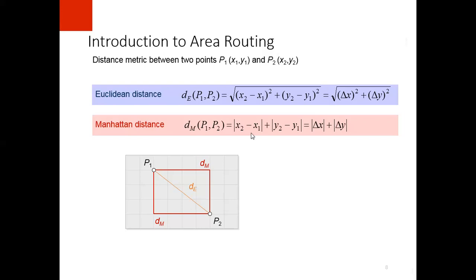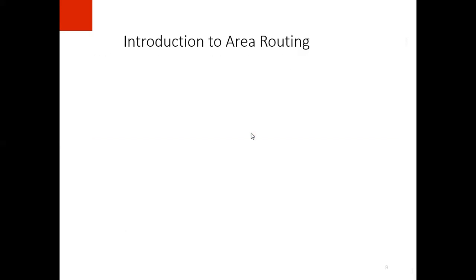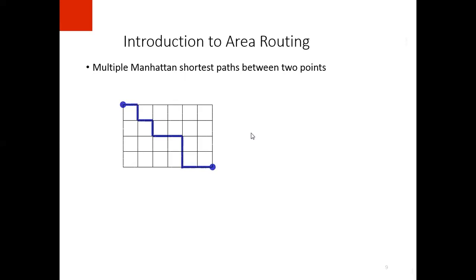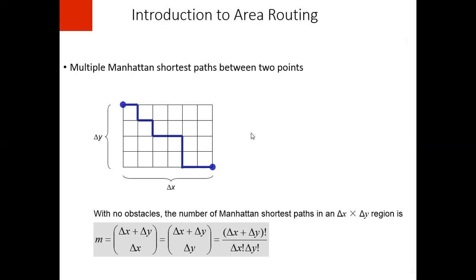Generally there can be multiple Manhattan paths between two points, but the Euclidean shortest path is always the unique path. There can be multiple Manhattan shortest paths between two points. The total number of Manhattan shortest paths in a delta x cross delta y region is given by this formula.